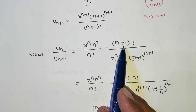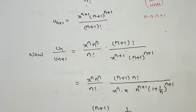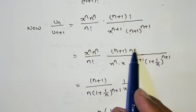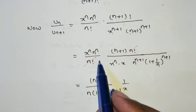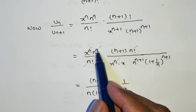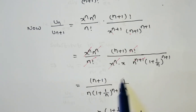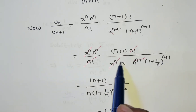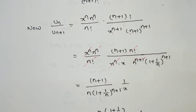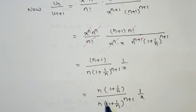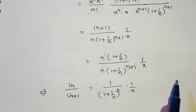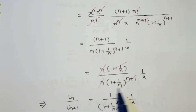Also, (n+1)! = (n+1)·n!. So n! cancels, xⁿ cancels, and nⁿ partially cancels leaving one extra n. After simplification, uₙ/uₙ₊₁ = 1 / [(1 + 1/n)ⁿ · (1/x)], which simplifies further — taking n outside and cancelling — to 1 / [(1+1/n)ⁿ · (1/x)].